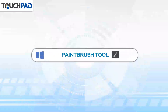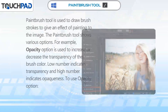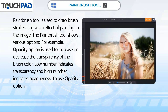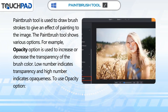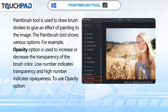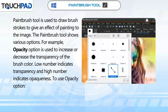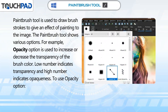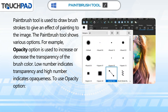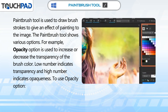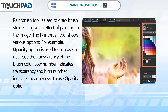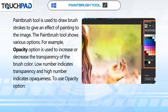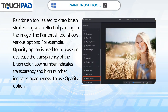The Paint Brush Tool is used to draw brush strokes to give an effect of painting to the image. The Paint Brush Tool shows various options. For example, the Opacity option is used to increase or decrease the transparency of the brush color. A low number indicates transparency and a high number indicates opaqueness.